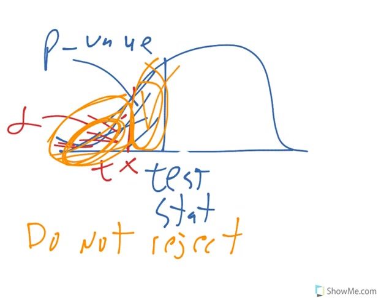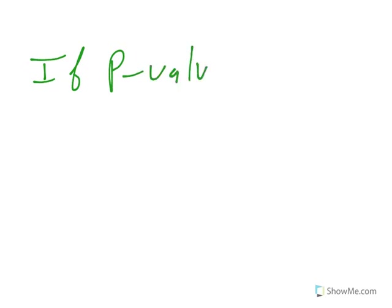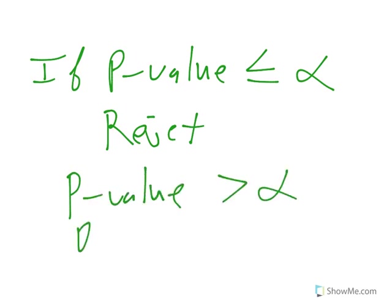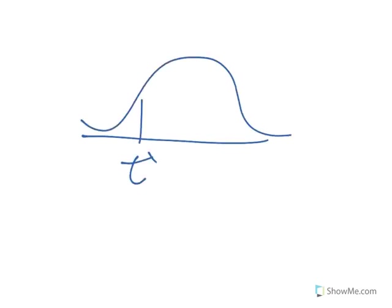That's the issue with hypothesis testing. I always like to do the p-value approach because the p-value has a nice simple rule: if p-value is less than or equal to alpha, reject. If p-value is greater than alpha, do not reject. If you want to do test statistics and T-stars, then you always need to draw a picture to find out where things lie.